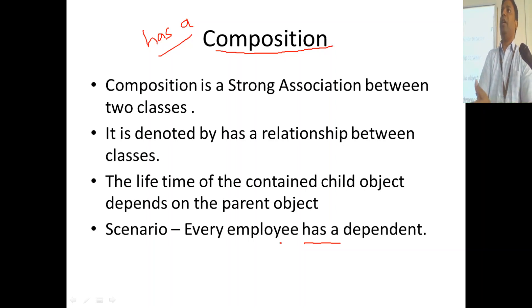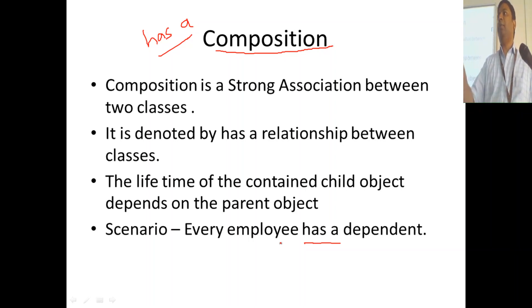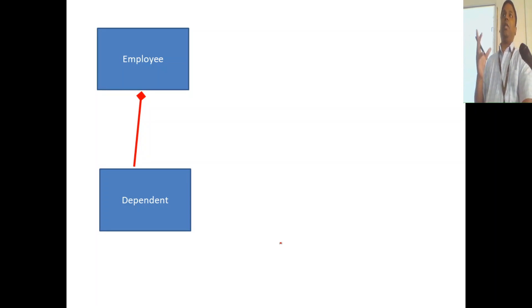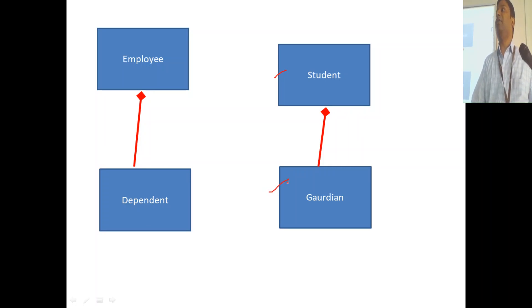As an employee of VIT, I can add one of my dependents. Since I am working in VIT, VIT will offer medical insurance cover for my wife, father, or mother who is dependent on me. So these dependents get added to the system. Employee has a dependent — this kind of notation in UML represents this 'has-a' relationship where one object contains another object. When you talk about students, a student has a guardian.